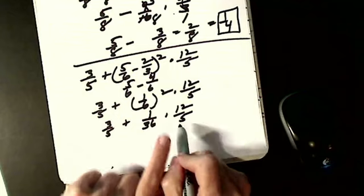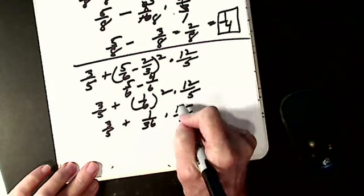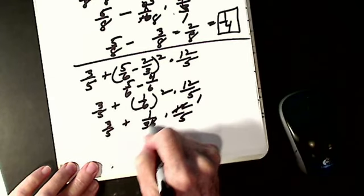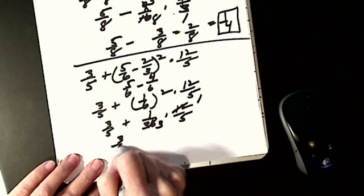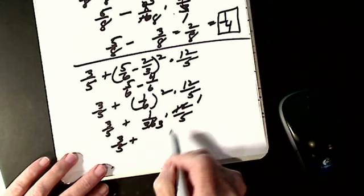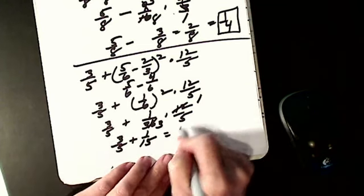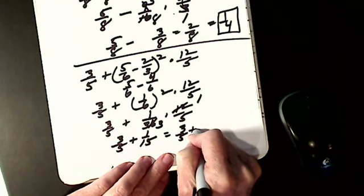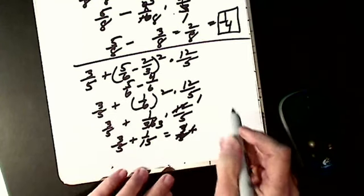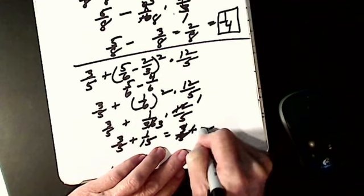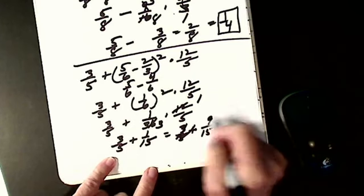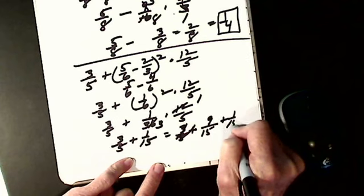I have to do multiplication before addition. Cancel twelve into twelve to get one, and twelve into thirty-six to get three. That gives me one-third times one-fifth, which is one-fifteenth. Now I have three-fifths plus one-fifteenth. Change three-fifths to nine-fifteenths. Nine-fifteenths plus one-fifteenth.